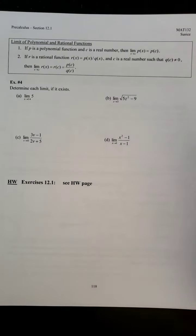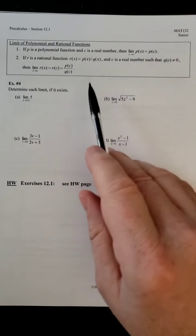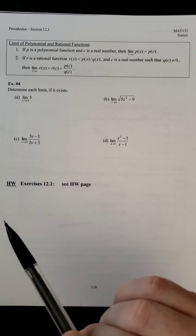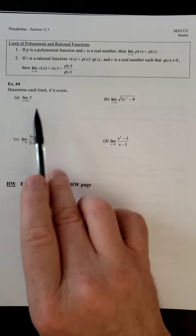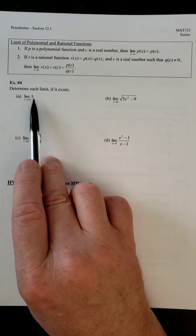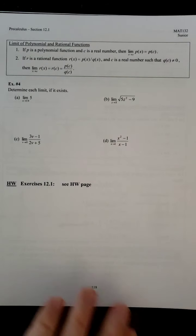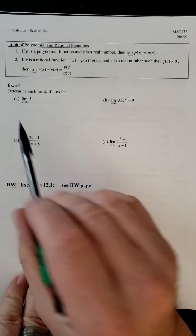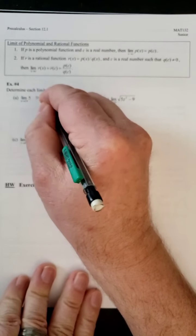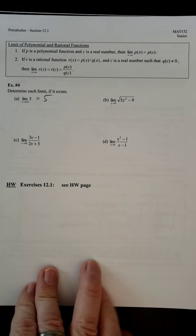So, we're going to see that in action right now. So, again, a couple more properties, but they're really essentially the same types of things we've seen already. So, determine each limit if it exists. The limit of 5 as x approaches 14. So, remember, the constant is just the constant function, the horizontal line. So, no matter what x we approach, it's still going to be approaching 5.